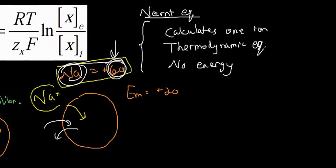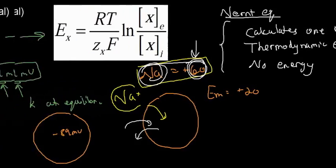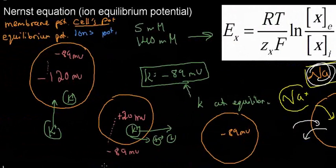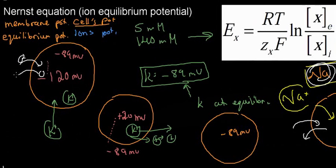The Nernst equation tells us at what point a given ion would have no net flux — at what point it would be comfortable. Now, the Goldman-Hodgkin-Katz (GHK) equation is more complicated, but in physics if something is more complicated, maybe it's better. We can see it already has the same basic ingredients as the Nernst equation. But it also includes calculations for different ions — not just one — so it is already more realistic. The P in the equation represents the permeability of a given ion.